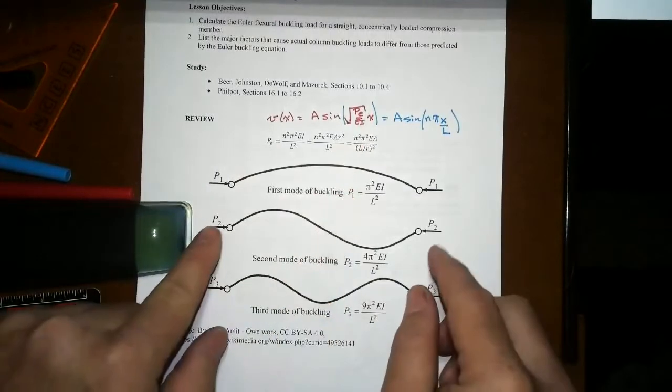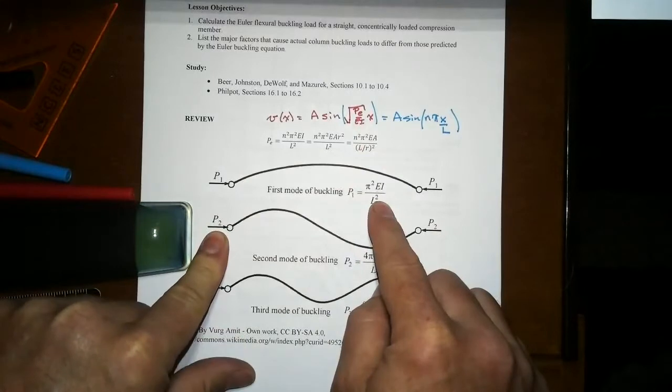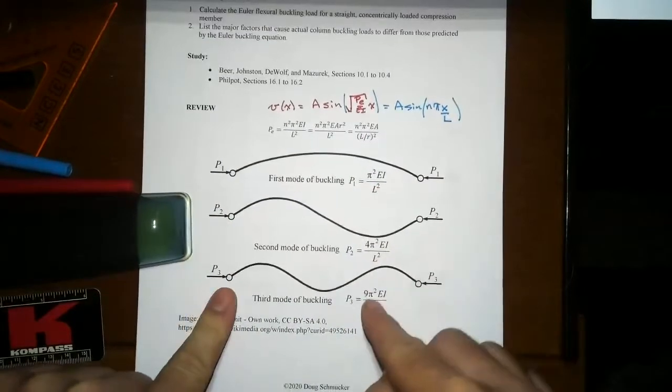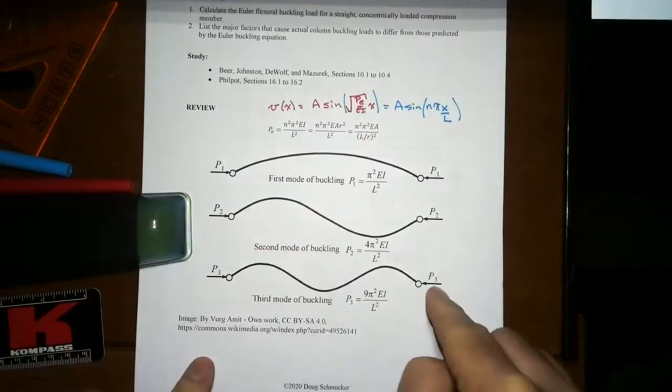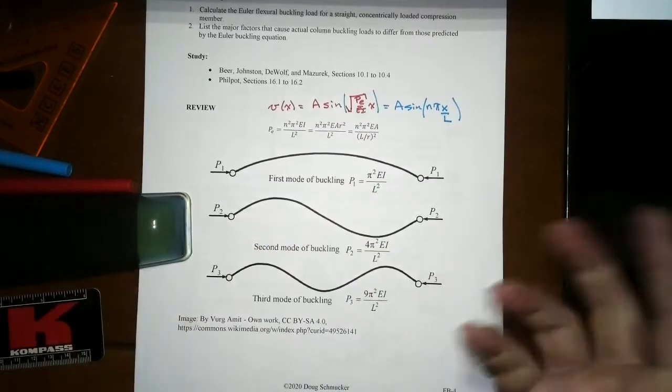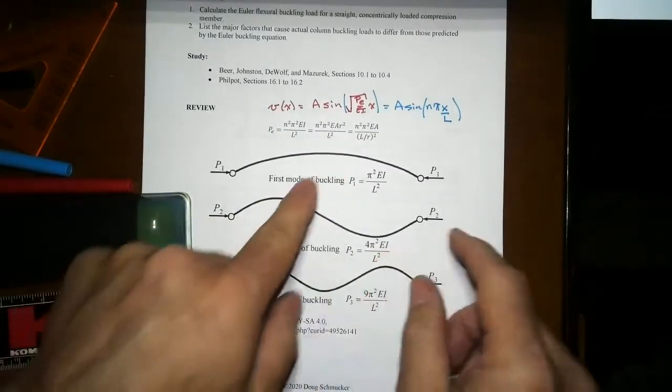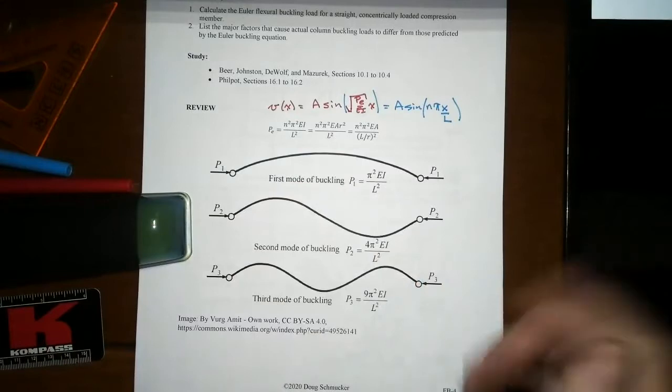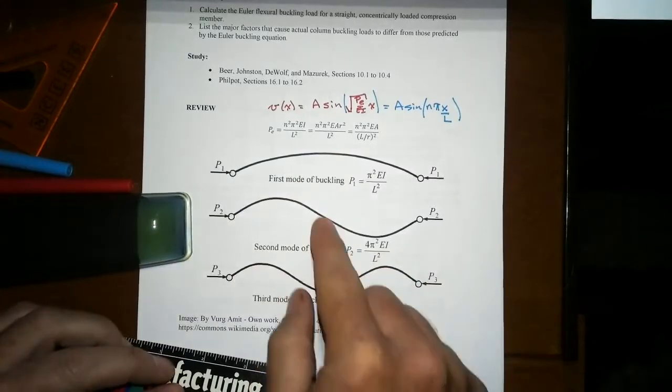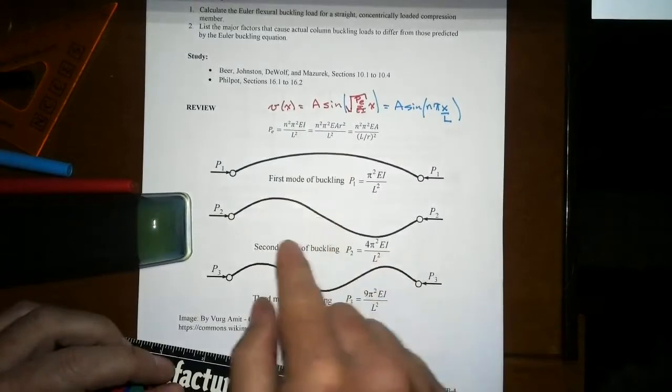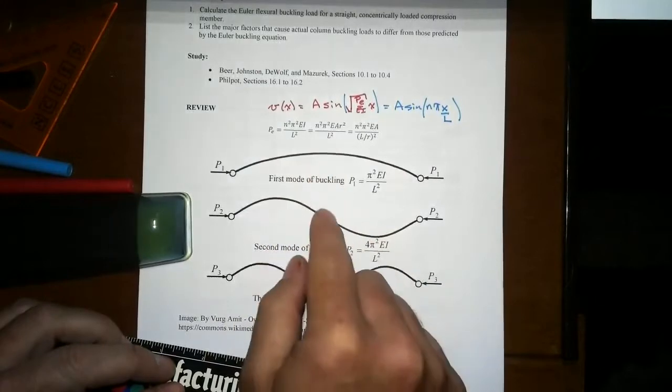All else being equal, then P2 is four times the value of the first mode. The third mode, being n equal to 3, means it's nine times as much as the first mode. So if there's nothing to prevent these other modes from happening, well, it's going to buckle at the lowest or the first possible value that it can. But if you have some sort of intermediate bracing point there, say at the midpoint, you're not going to get this first one because it can't bounce up in and out. It'll do this one.